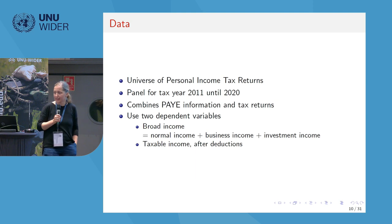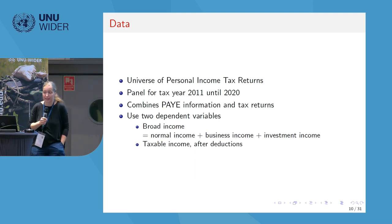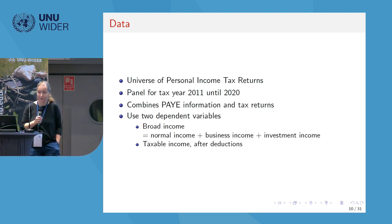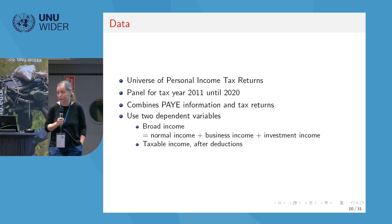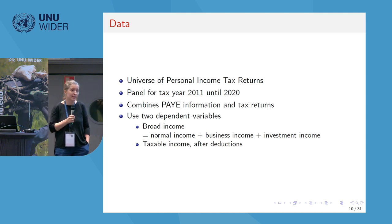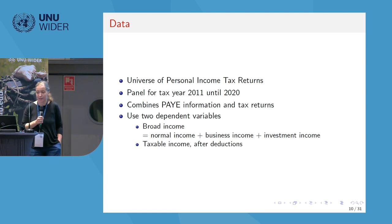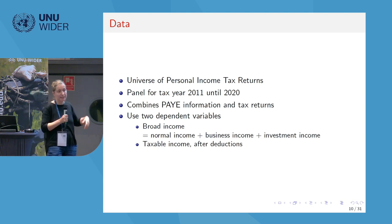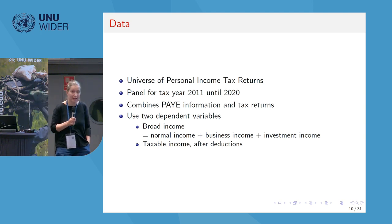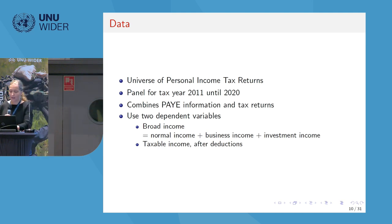In terms of data, we use the universe of personal income tax returns from South Africa for the years 2011 to 2020. This information combines the actual PIT returns that individuals submit, and pay information submitted by employers — third-party reported income information. As dependent variables, we use two income concepts: a broad income concept, and actual taxable income after deductions that the personal income tax system allows.